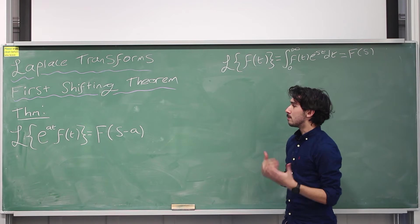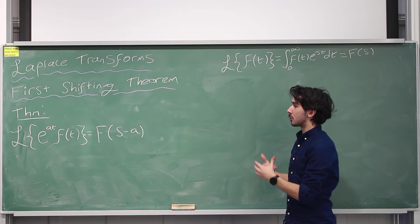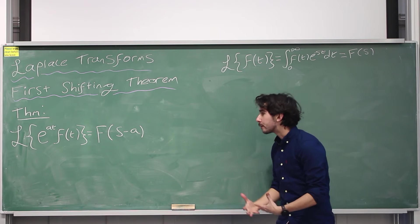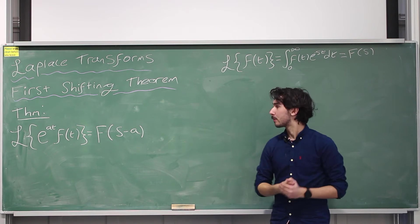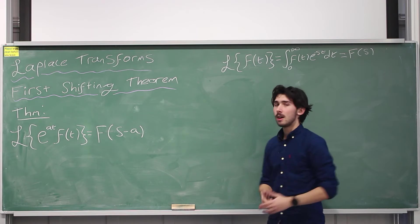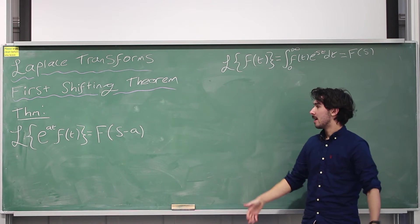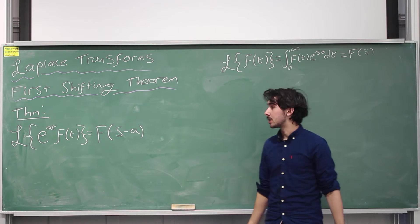So basically if you multiply your function by e to the at and then take the Laplace transform of it, all it will do is it will shift the Laplace transformed function f of t a units to the right along the axis I guess. It's very simple, it's very nice.